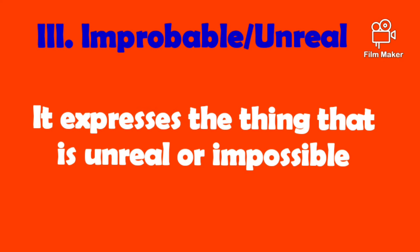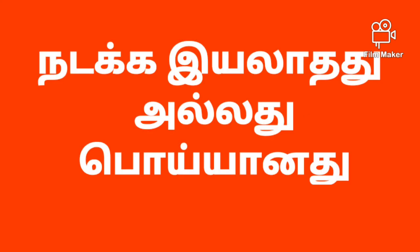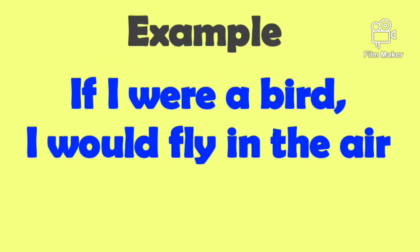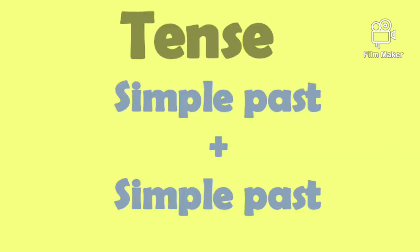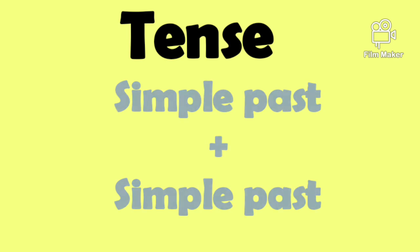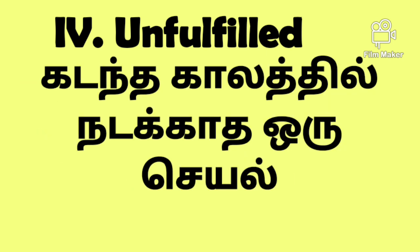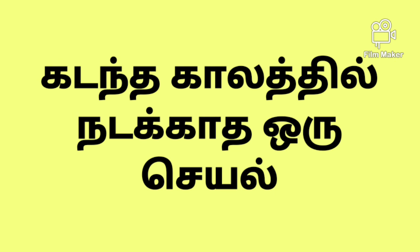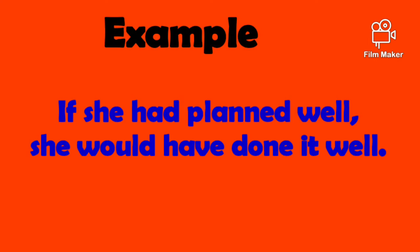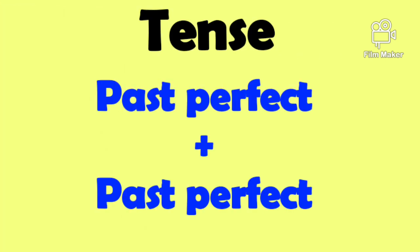The third one is improbable or unreal. It expresses the thing that is unreal or impossible. For example, if she had planned well, she would have done it well. Here, the tense formation is past perfect plus past perfect.